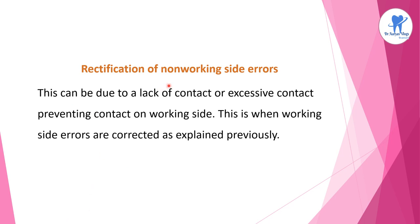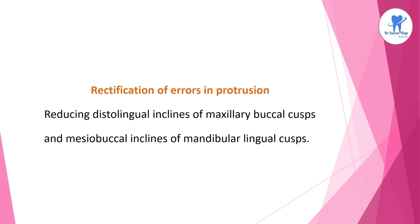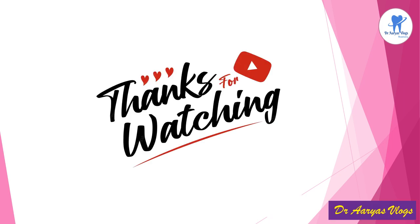Coming to the rectification of non-working side errors — these can be due to lack of contact or excessive contact preventing contact on the working side, and are corrected as the working side errors explained previously. The rectification of errors in protrusion is done by reducing the distolingual inclines of the maxillary buccal cusp and mesiobuccal inclines of the mandibular lingual cusp. These are the various selective grinding procedures in detail. That's all for today's lecture — please like, share, and subscribe to my channel for more videos. Thanks for watching.